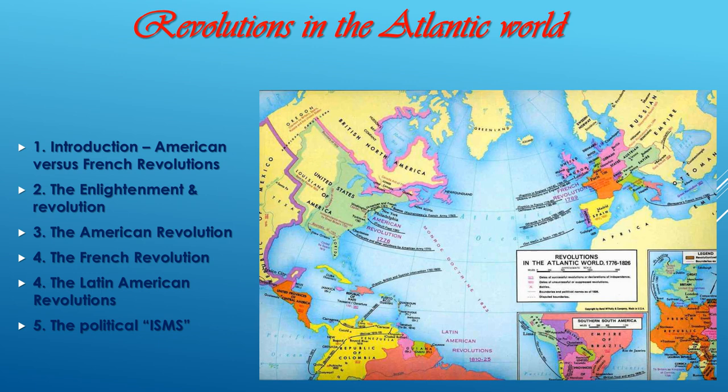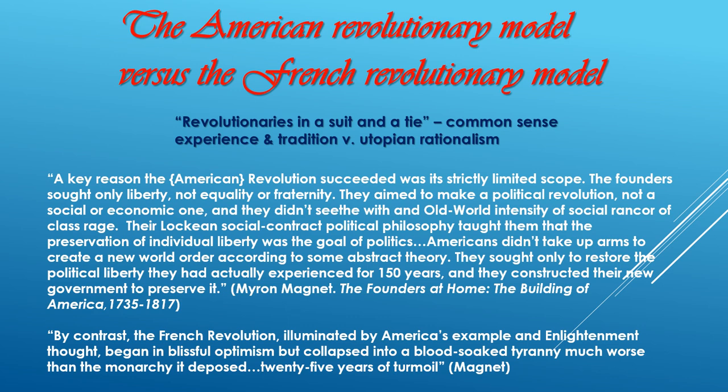You can see on the map that the American Revolution is on the left, the French Revolution on the right, and the Latin American Revolutions down below — sort of a triangle, something like the triangular trade but not the same destinations. So: the American Revolutionary model versus the French Revolutionary model. If you were planning your own revolution, you have two different models to go on here.